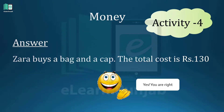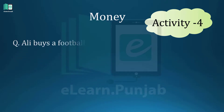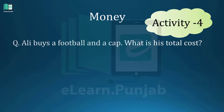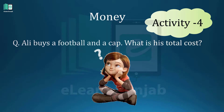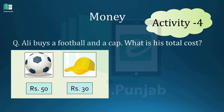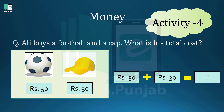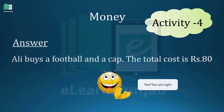Yes, you are right. The second question is: Ali buys a football and a cap. What is his total cost? Think and write the answer in your notebook. See the price of the football and cap. Fifty plus thirty is equal to how many rupees? Fifty plus thirty is equal to eighty rupees. The total cost is rupees eighty.